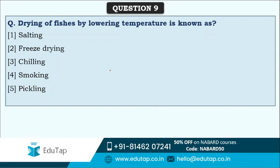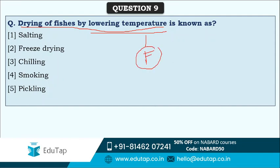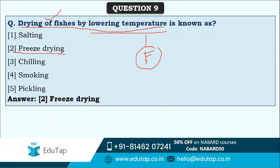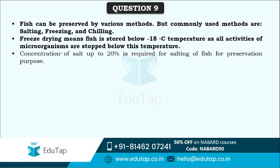Next question: drying of fishes by lowering temperature is known as what? Options are salting, freeze drying, chilling, smoking, or pickling. You can answer this easily - lowering temperature is freezing, so drying of fishes by lowering temperature is known as freeze drying. The answer is option two - freeze drying. In the freeze drying method, fishes are stored below minus 18 degrees Celsius, at which temperature all activities of microorganisms are stopped.